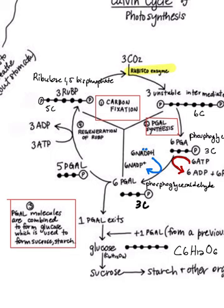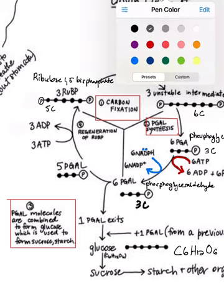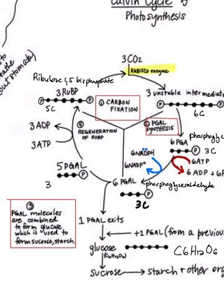This brings us back to what we had. Here happening, of course, was five PGAL molecules staying behind in the cycle and those still are three carbons big each and they will go through a series of reactions next. Here during a phase we refer to as regeneration of RuBP.